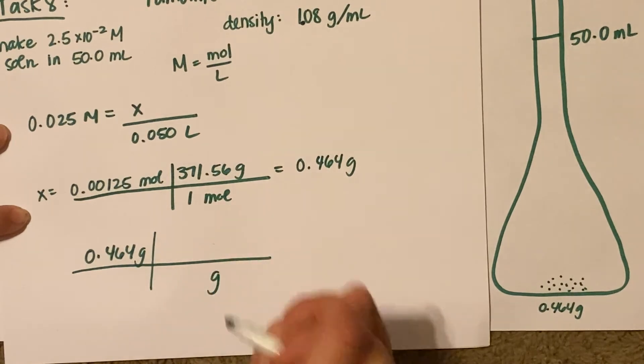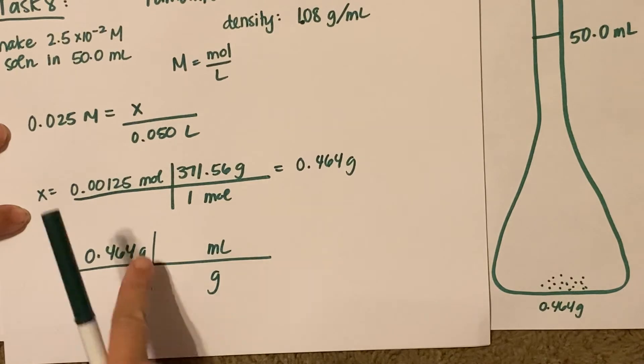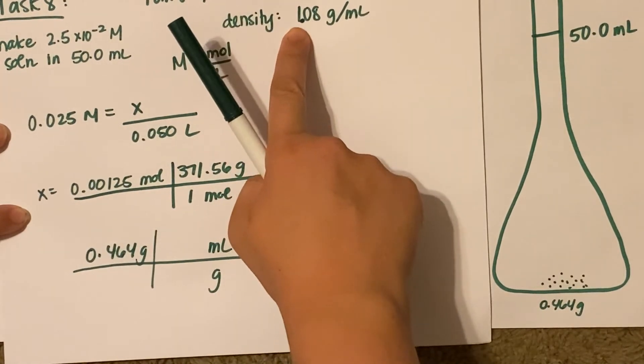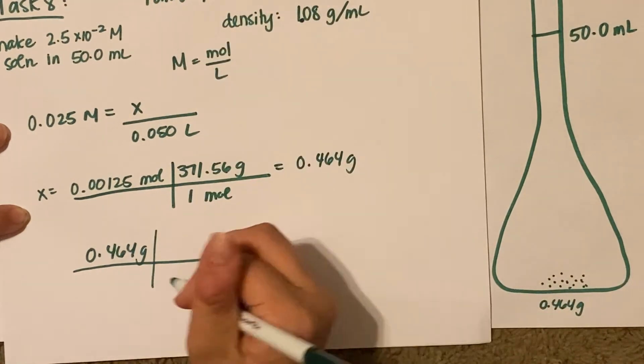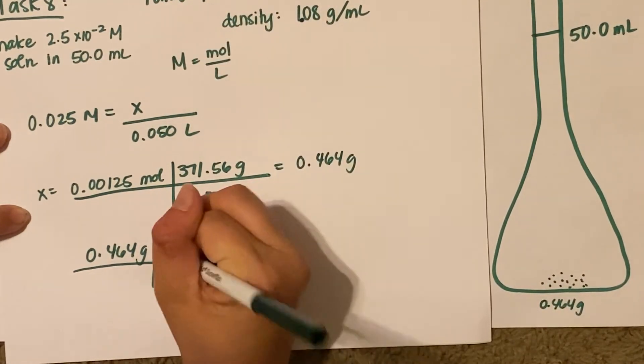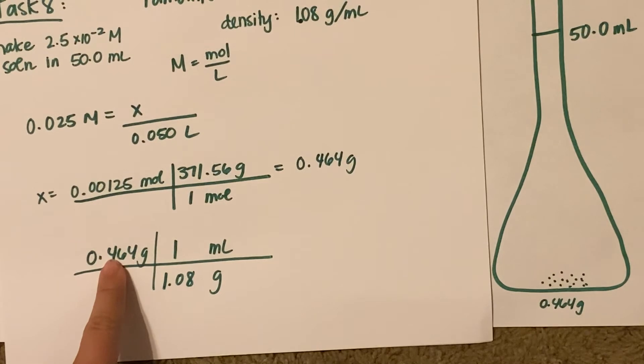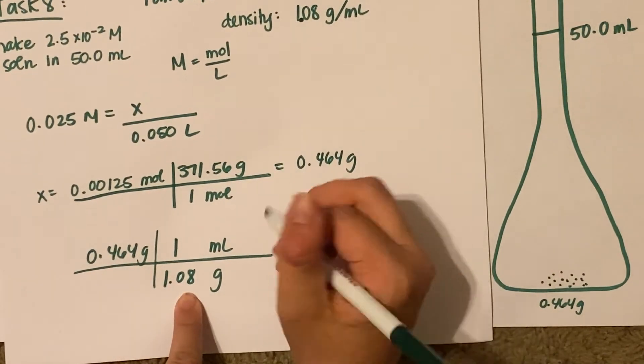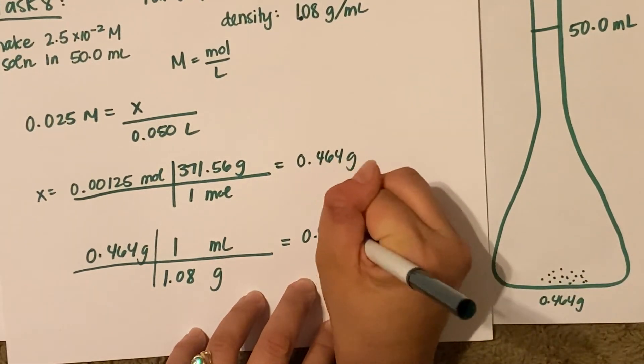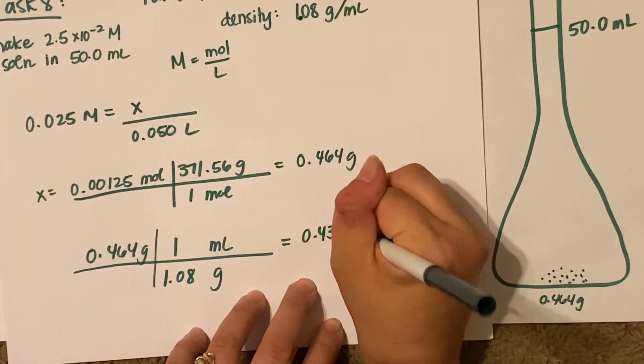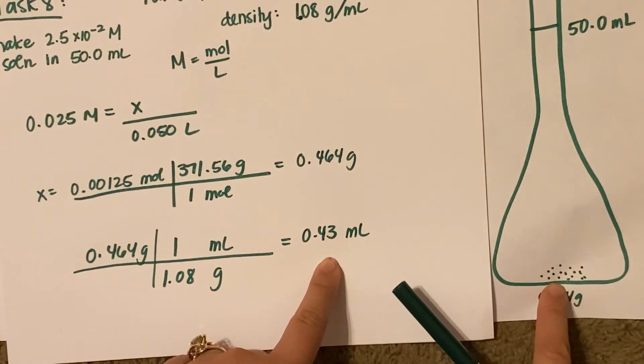This looks kind of funny. I'm going to put grams on the denominator and milliliters on the numerator because I need to cancel grams out. It's 1.08 grams per mL, but that 1.08 goes on the denominator now. That's the number one mistake - these two numbers will be flip-flopped. So you take 0.464 divided by 1.08, and you get 0.43 milliliters. That's how much space this drug is taking up in your volumetric flask.